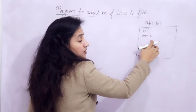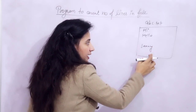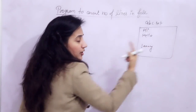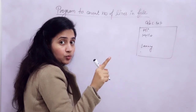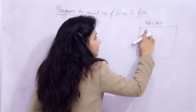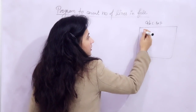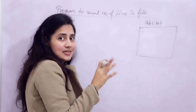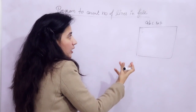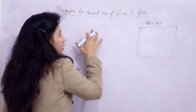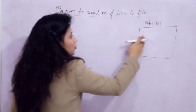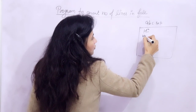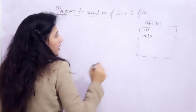If I have 'hi', 'hello', then a newline with nothing, then newline, then 'Jenny', then again a newline and the cursor is here — total lines are 1, 2, 3, 4, 5. That should be the output. Or if nothing is in the file and the cursor is here, we still have one line, so it should print 1.